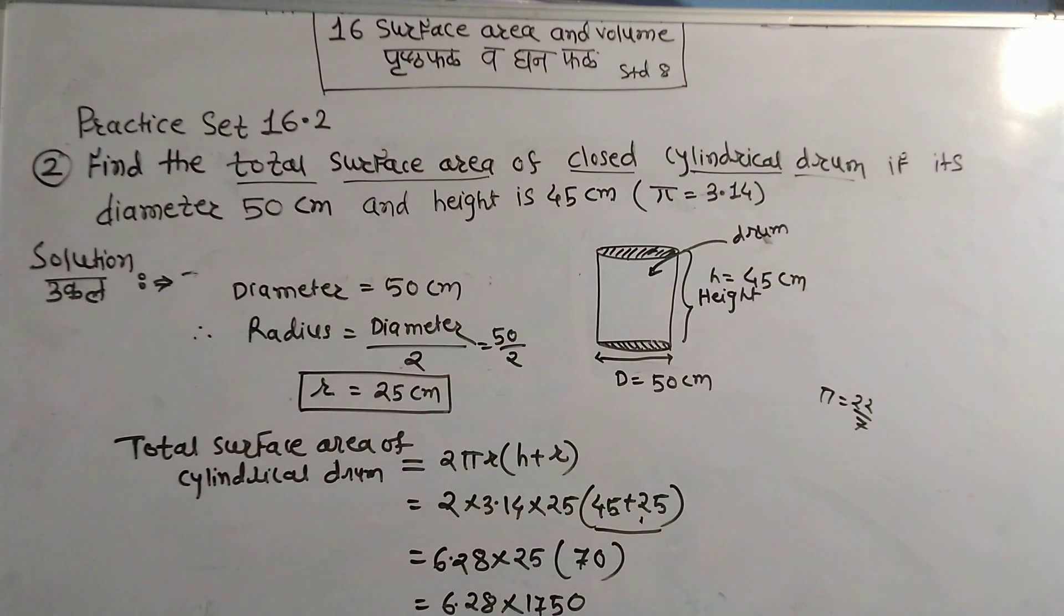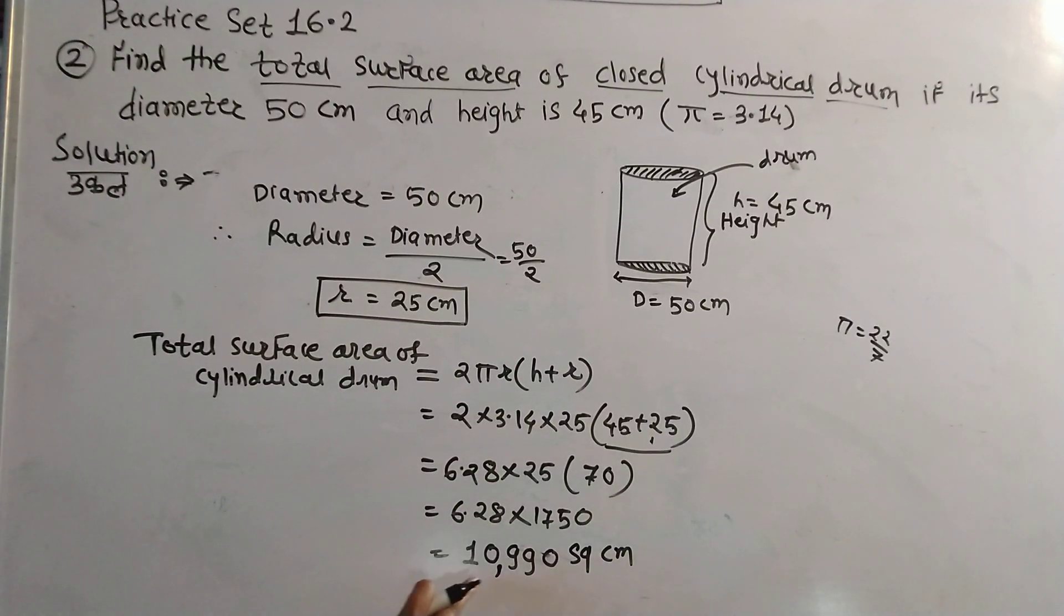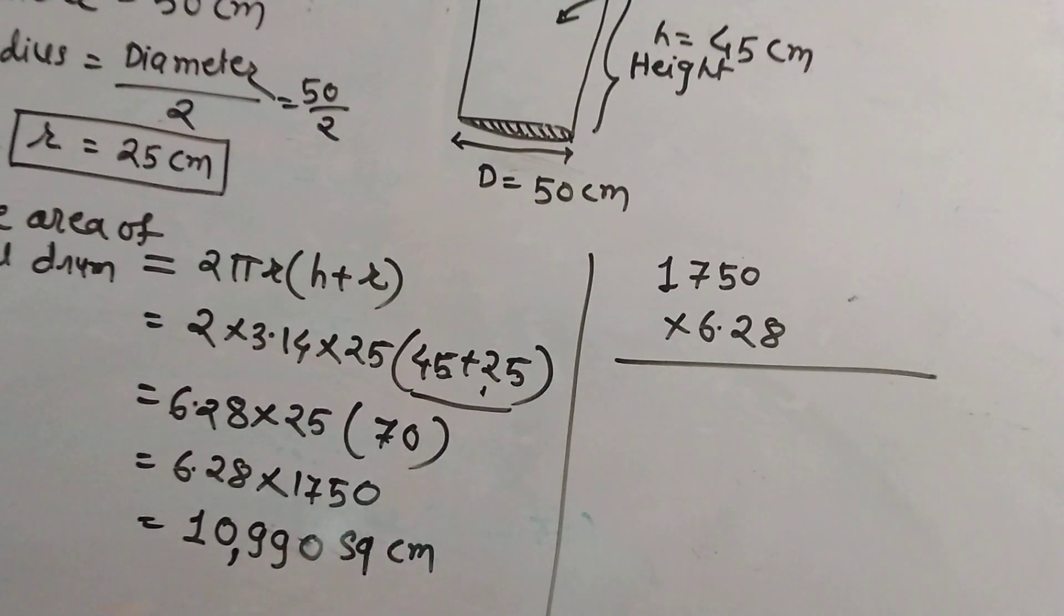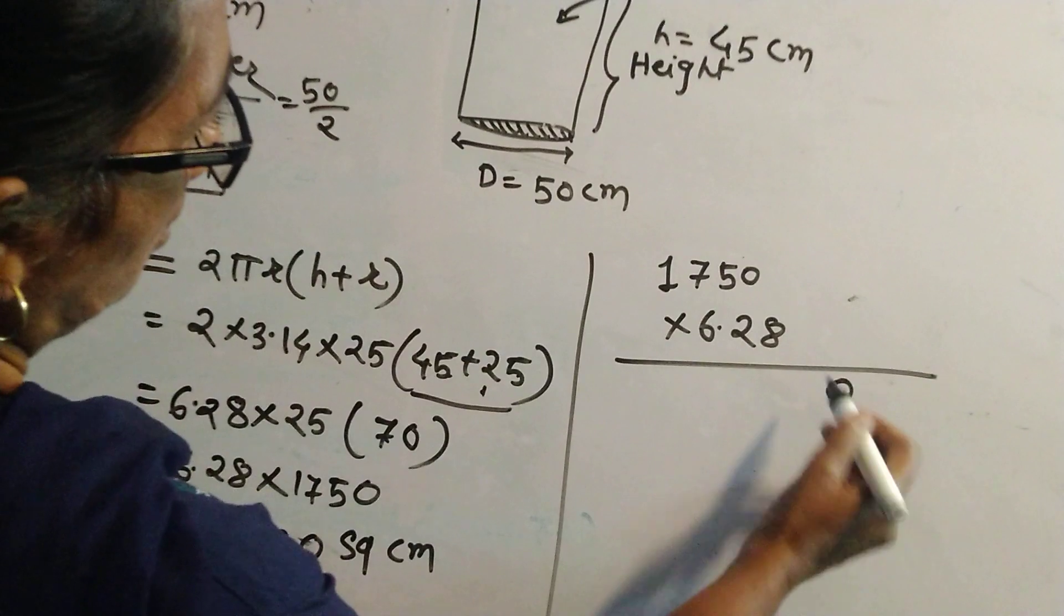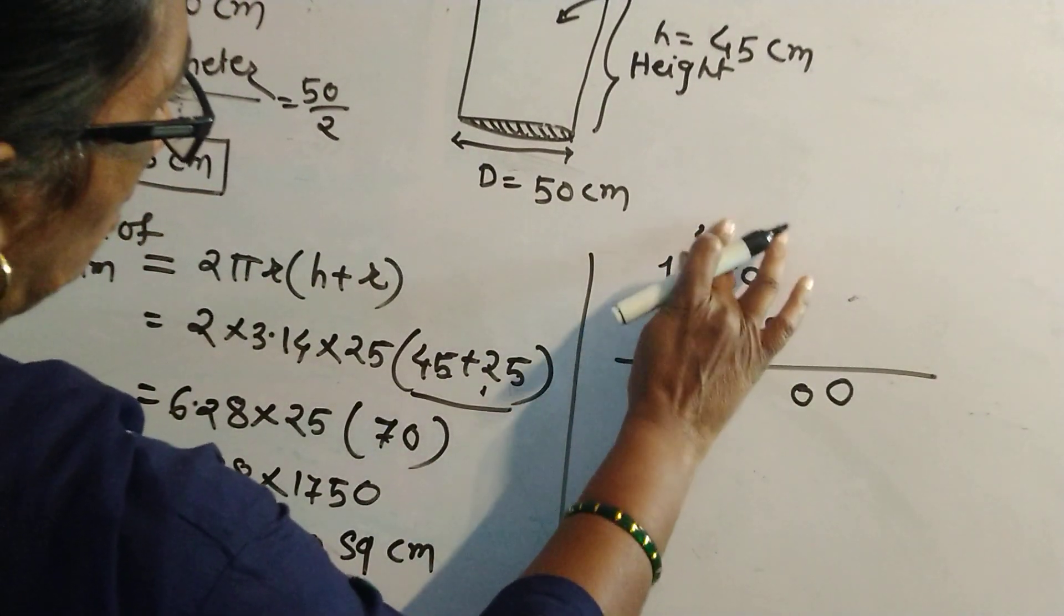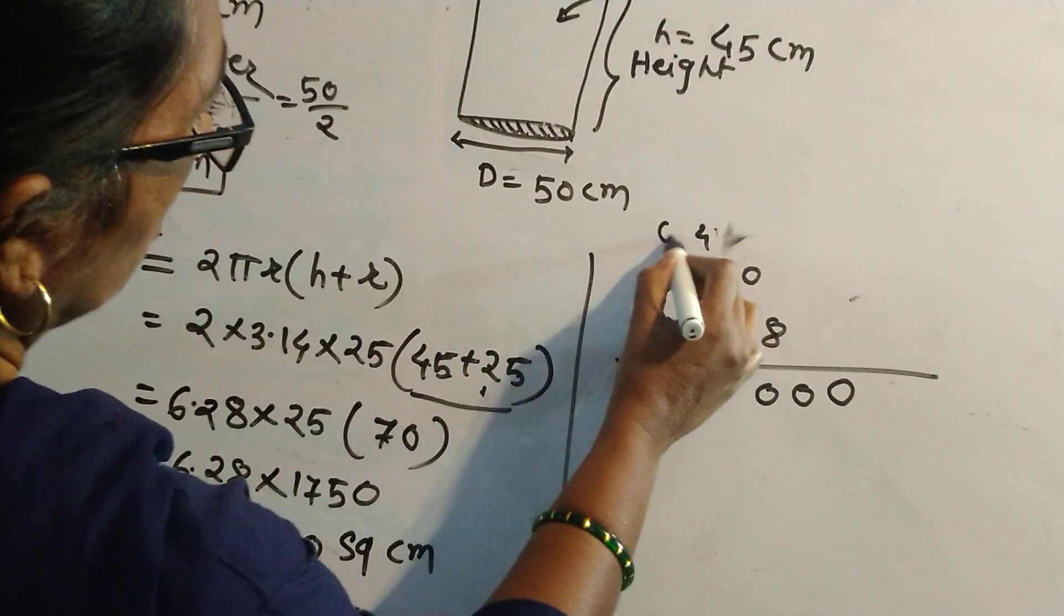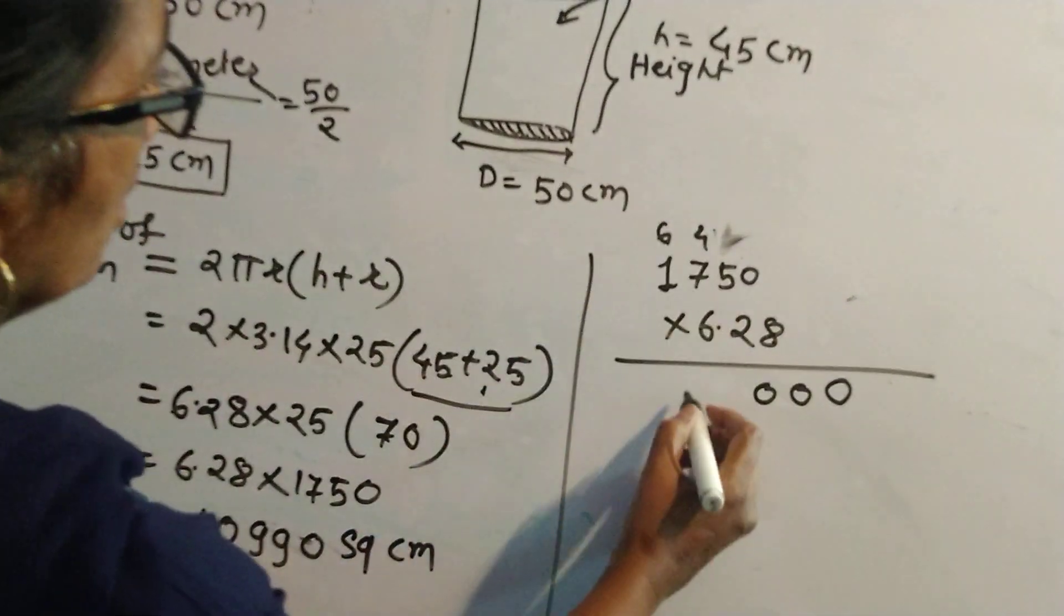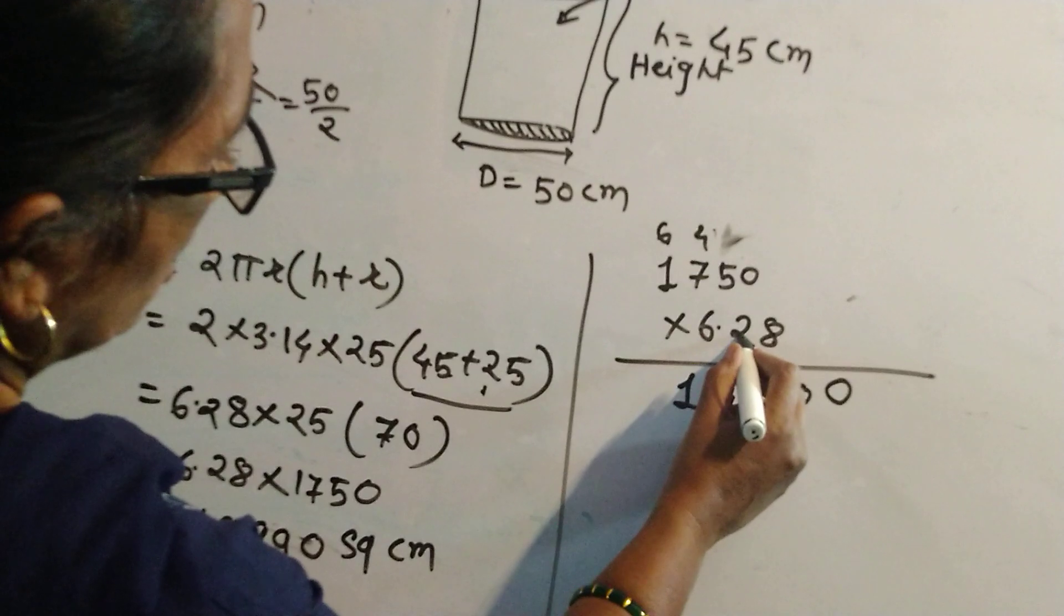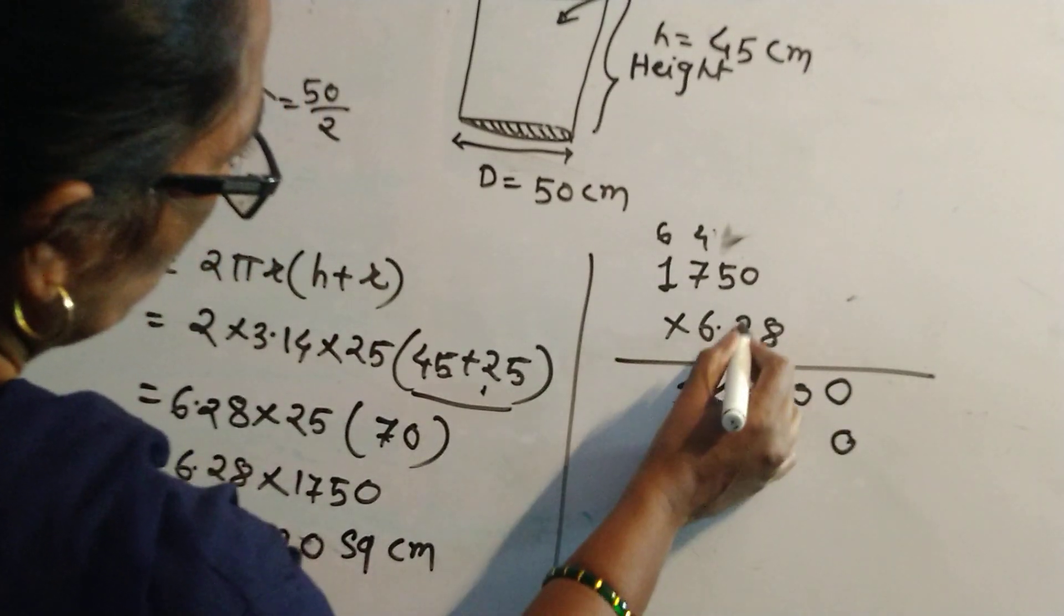6.28 into 25, calculating the multiplication. 6.28 into 70 equals 10,990.